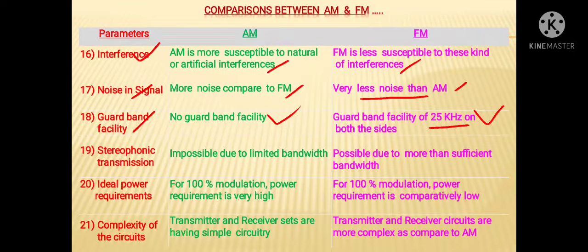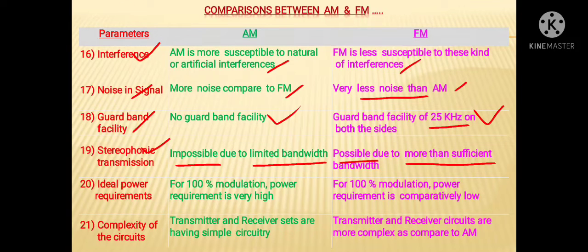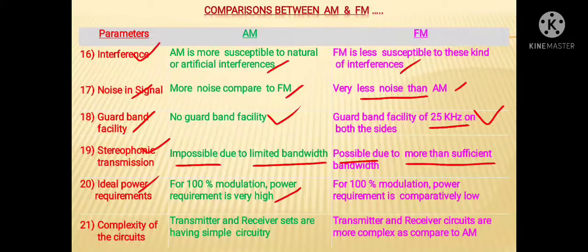Next is regarding stereophonic transmission. In AM, stereophonic transmission is impossible due to limited bandwidth. But in case of FM, stereophonic transmission is possible due to more than sufficient bandwidth. Regarding ideal power requirements, in AM for 100% modulation the power requirement is very high, whereas in case of FM for 100% modulation the power requirement is very low compared to AM.